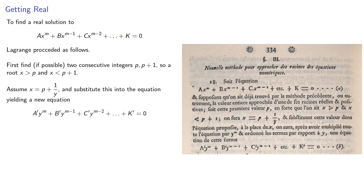By construction, 1 over y is greater than 0 and 1 over y is less than 1, so y is greater than 0, actually y is greater than 1.